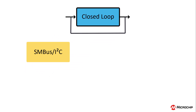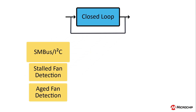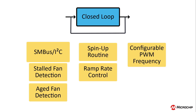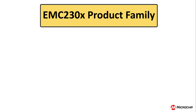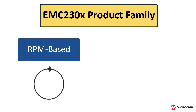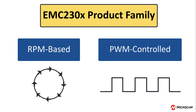They are all I2C or SMBus compatible. They also all have stalled or aging fan detection capabilities, a spin-up routine, ramp rate control, configurable PWM frequency, a watchdog timer, and a fan speed control algorithm. The EMC 230X family of devices are RPM-based PWM fan controllers and are strictly fan controllers.